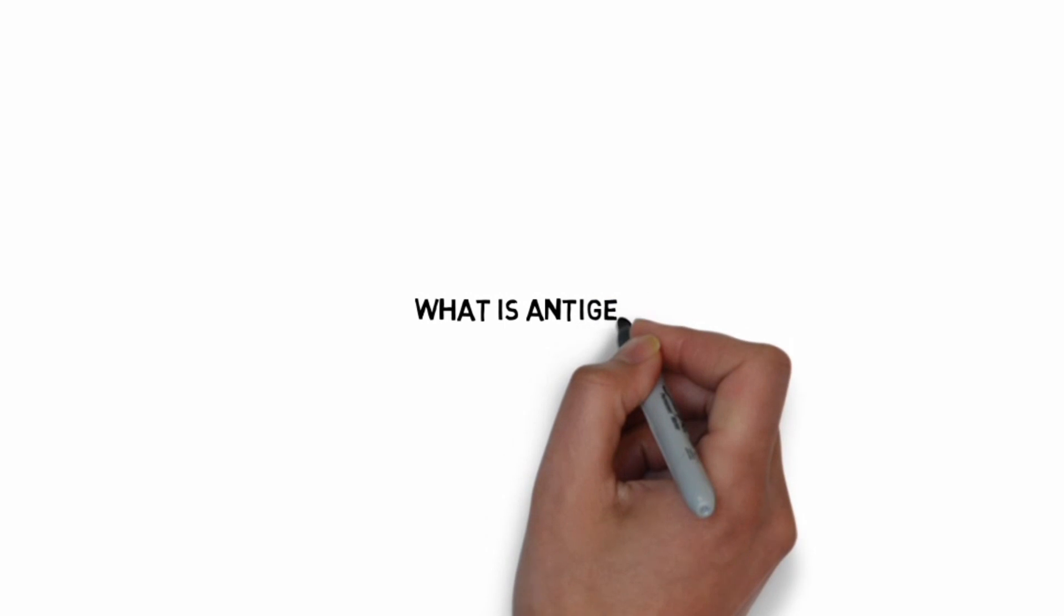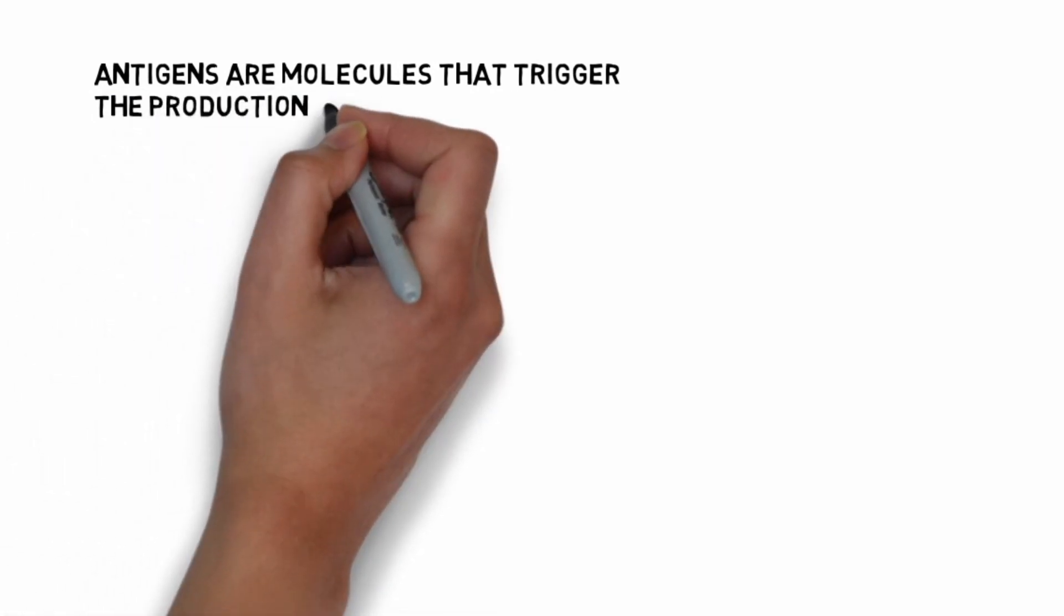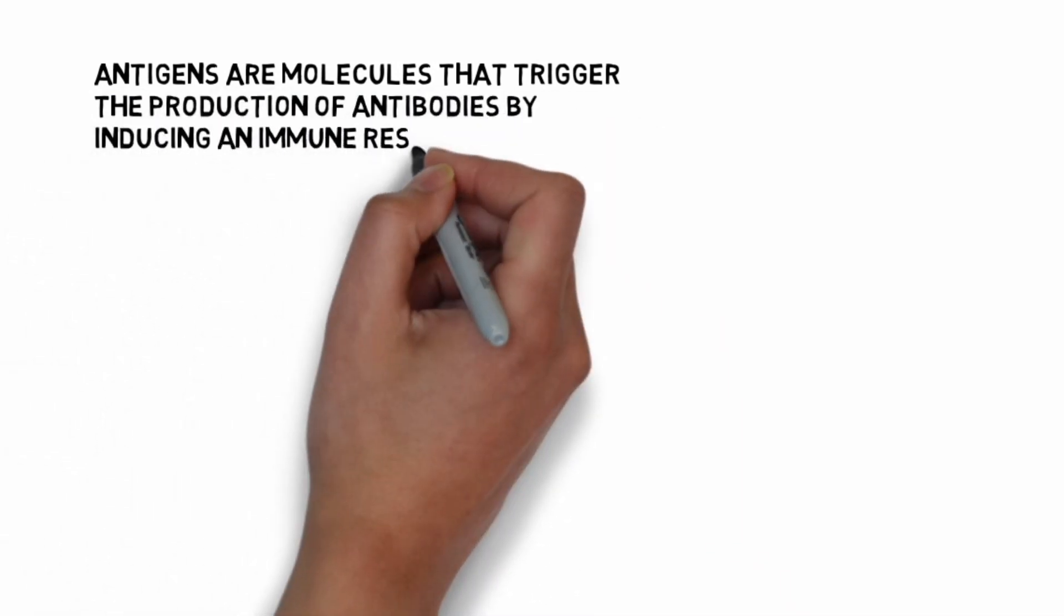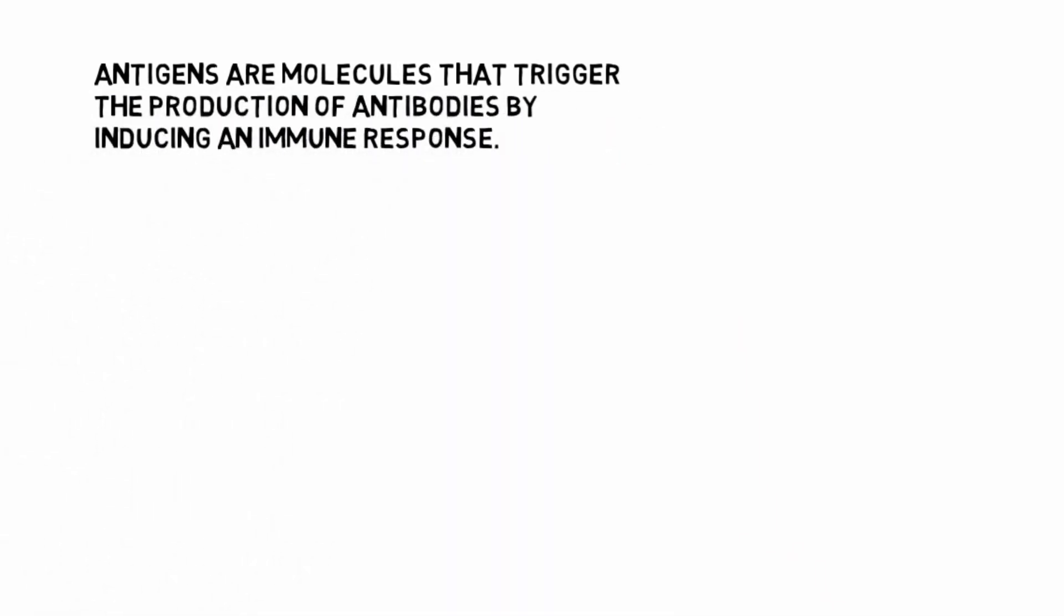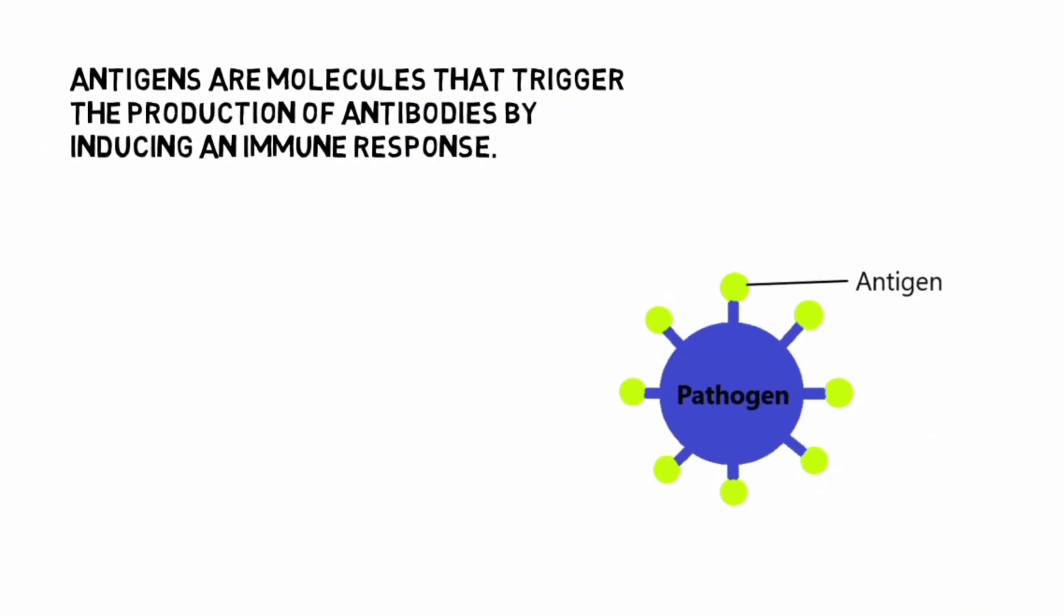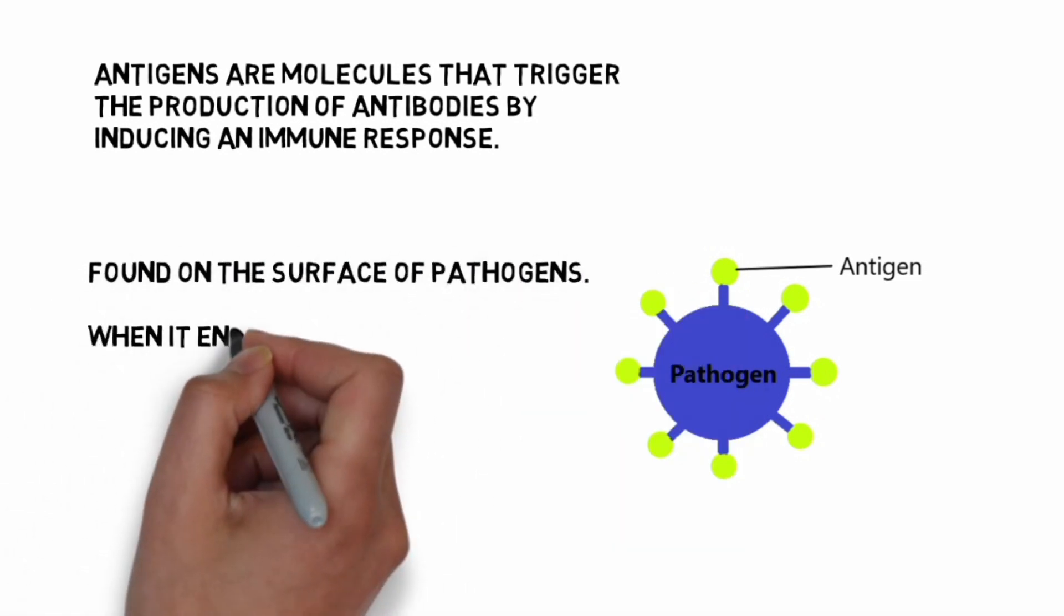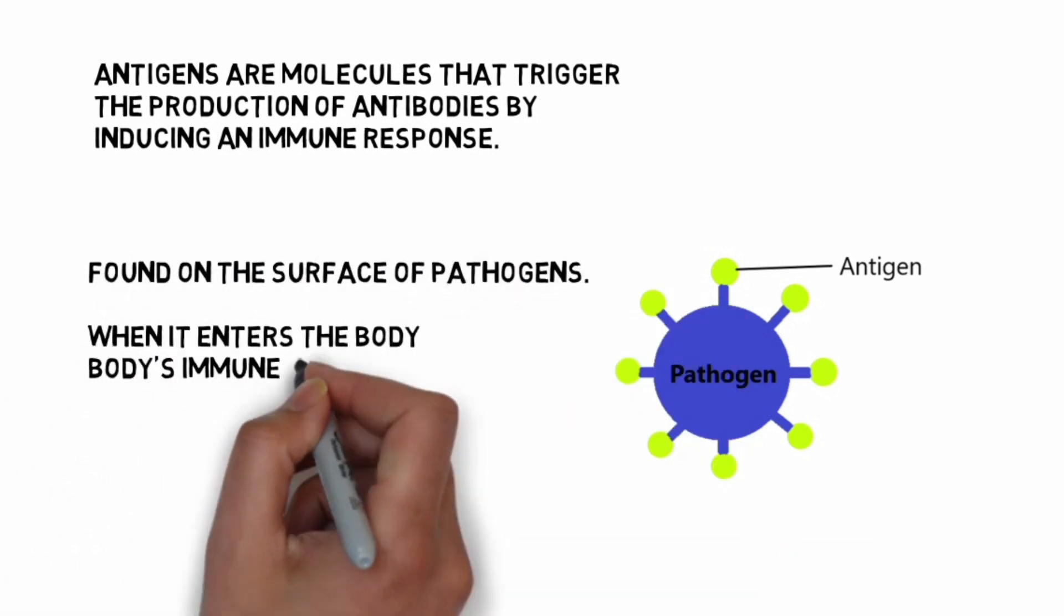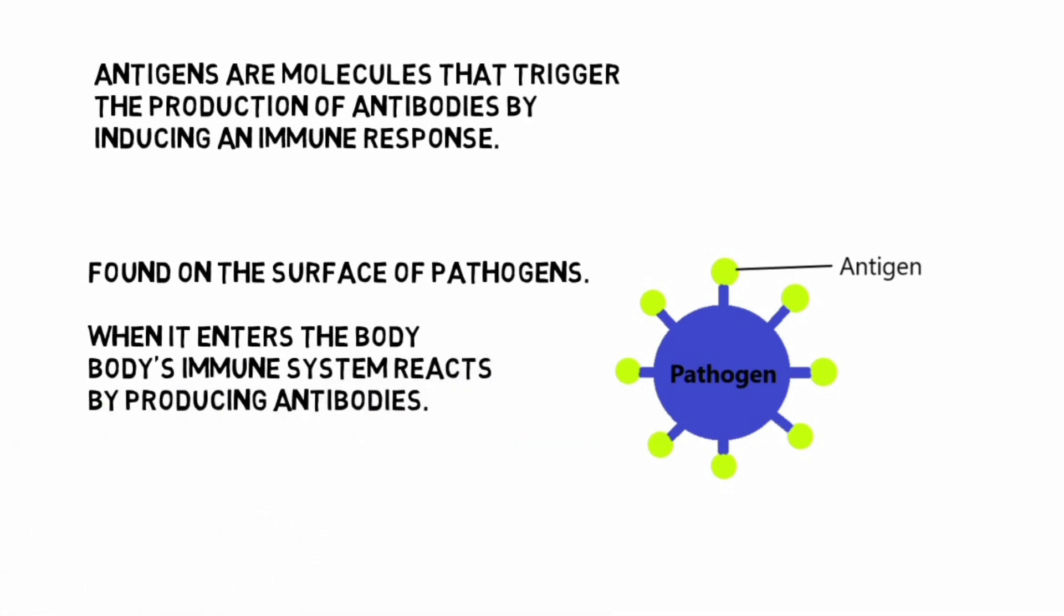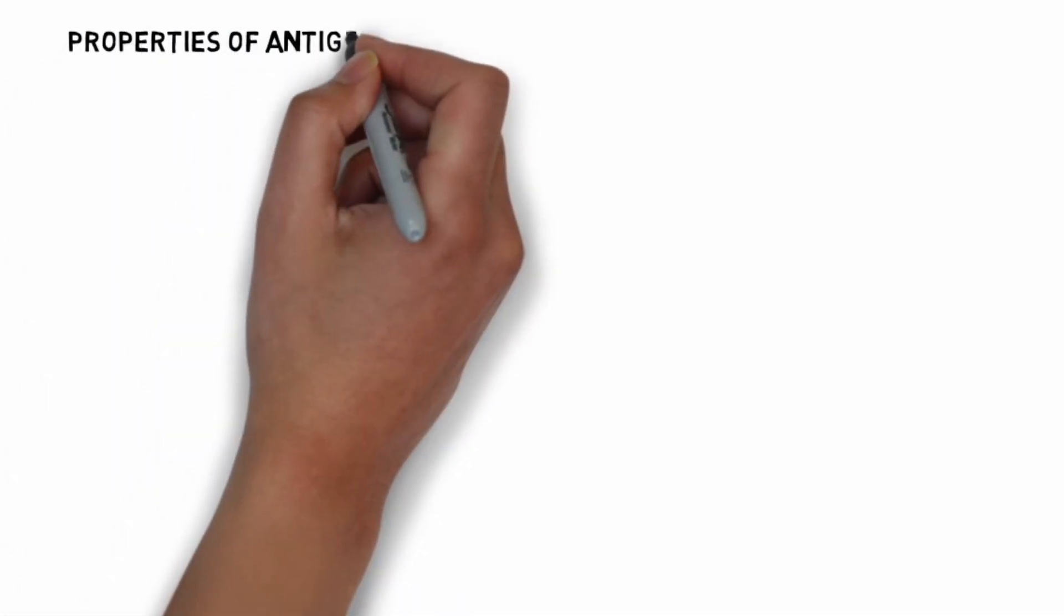What is an antigen? Antigens are molecules that trigger the production of antibodies by inducing an immune response. They are found usually on the surface of pathogens. When it enters the body, the body's immune system reacts by producing antibodies.